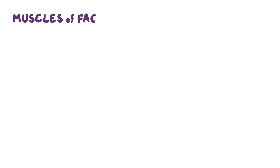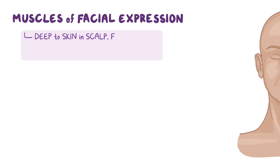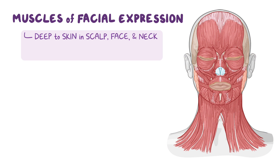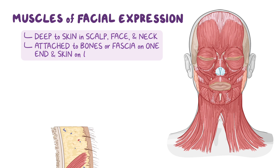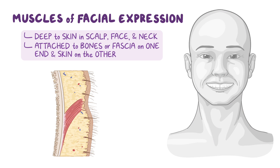Muscles of facial expression, simply known as the facial muscles, are found deep in the skin of the scalp, face, and neck. Most facial muscles are attached to bones or fascia on one end and skin on the other, so that when they contract, they create facial expressions.